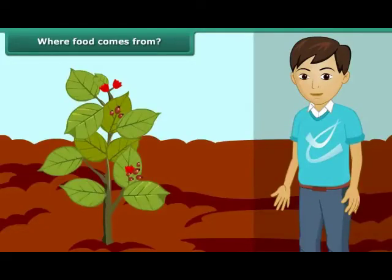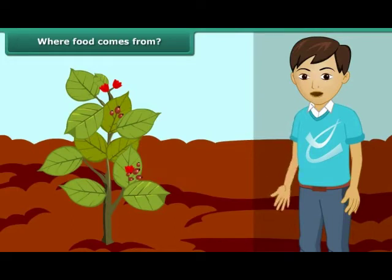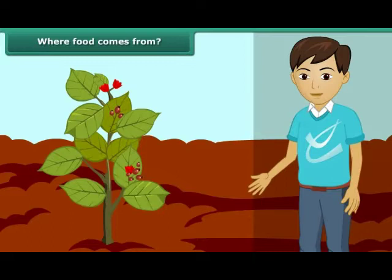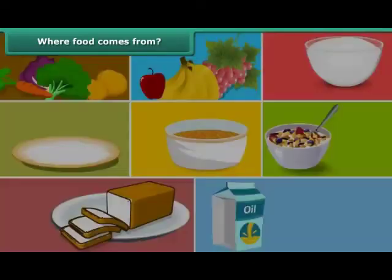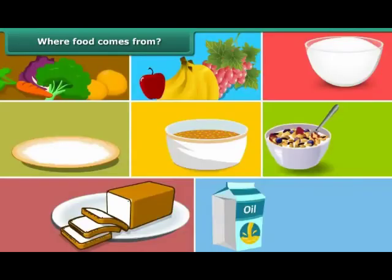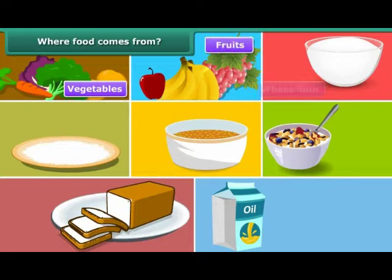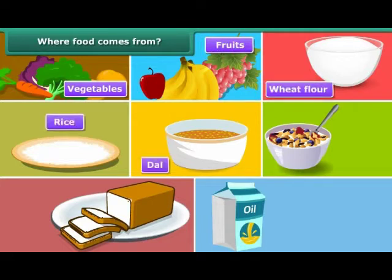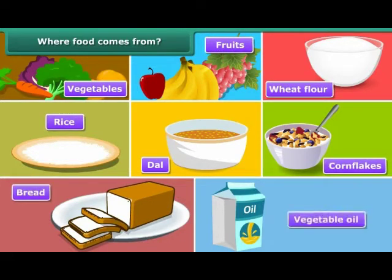Let us now discuss where we get the various food items to eat. Most of the food we get from plants, like vegetables, fruits, wheat flour, rice, dal, corn flakes, bread, vegetable oil, etc.